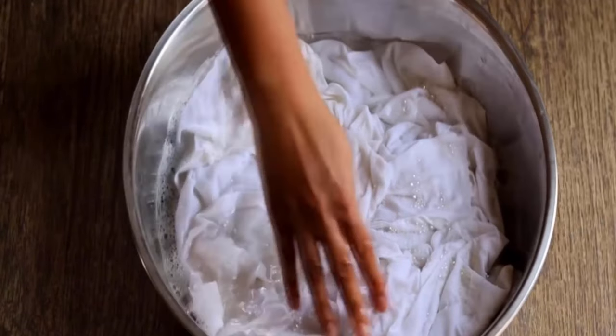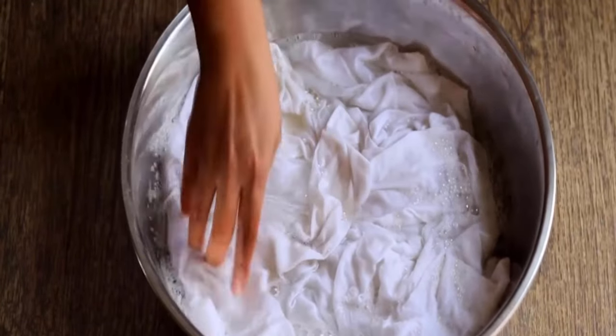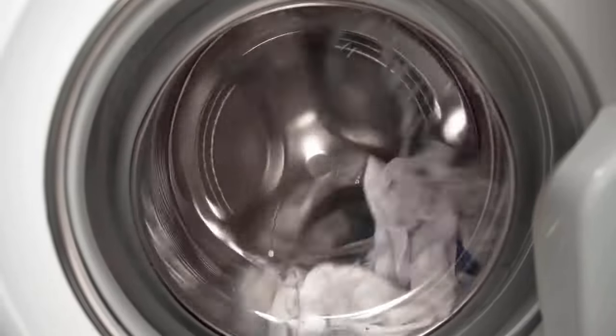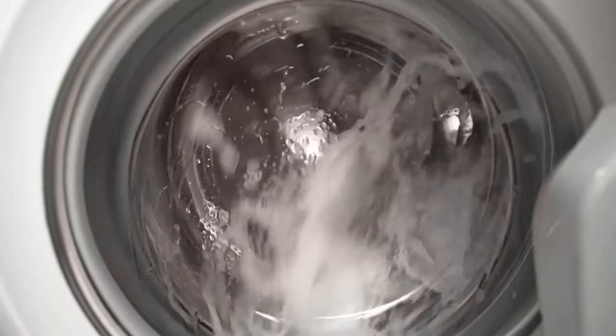Then soak your white clothes in the water and wait for two to three hours. Now wash your clothes with a normal wash cycle. You will get amazing results with this method.